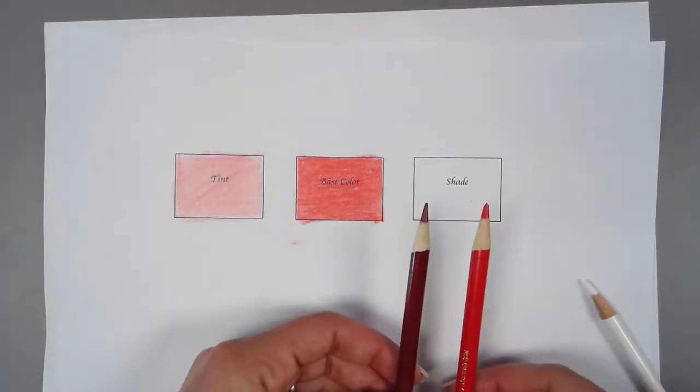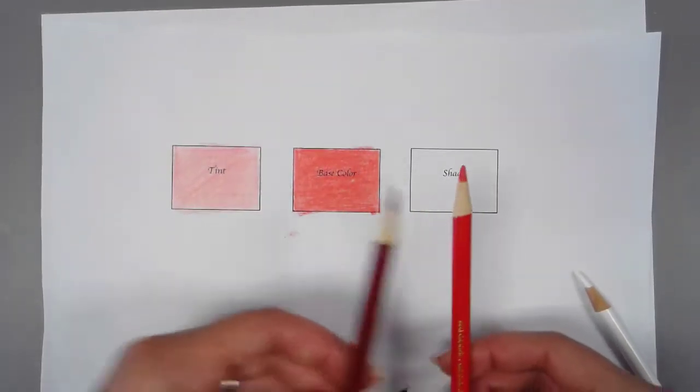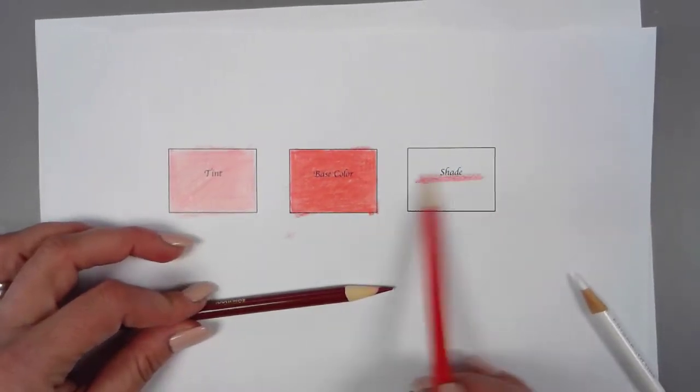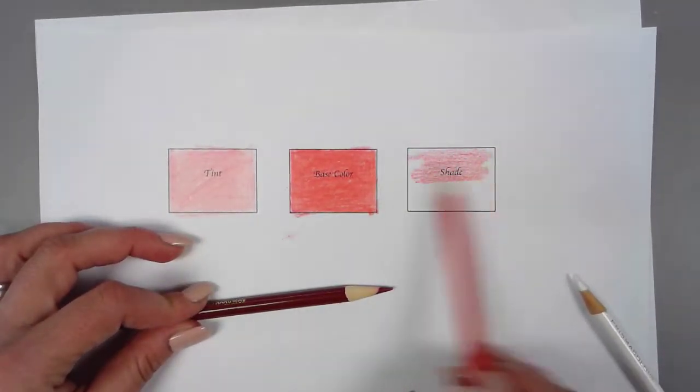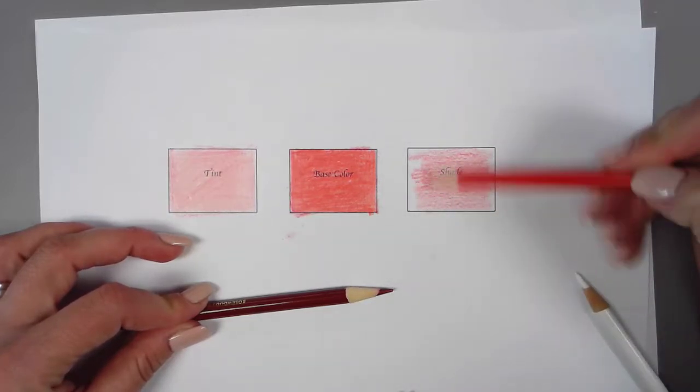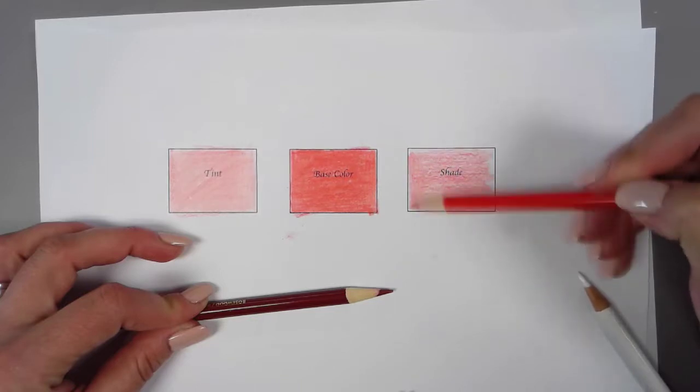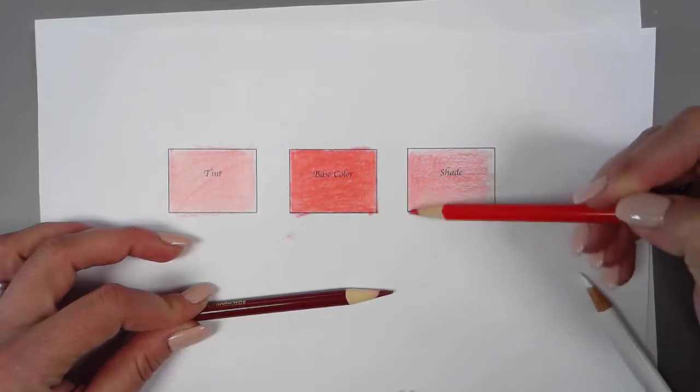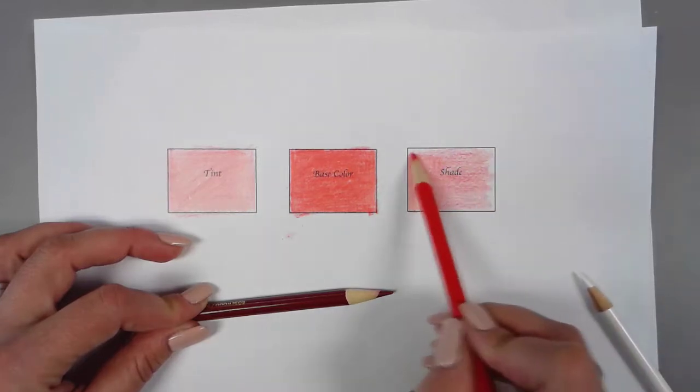But if you don't have those, you can use your base color first and you're going to layer on a darker version or something that will make it darker. So a blue would work, but that might make it purple, and I'm thinking a brown would look good.